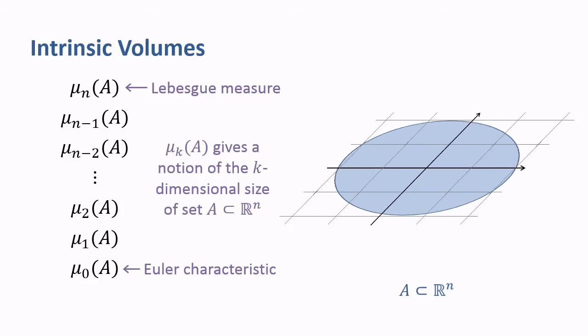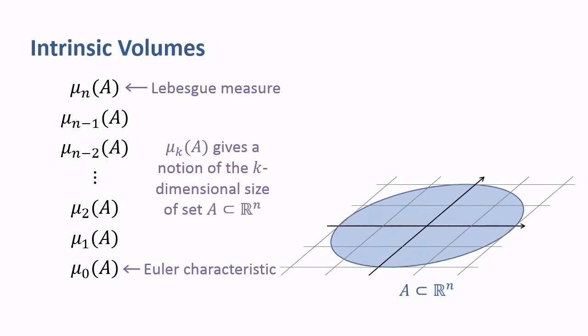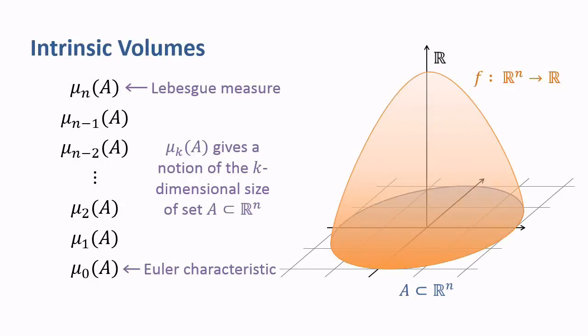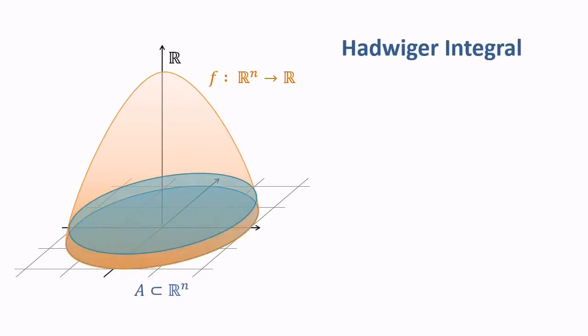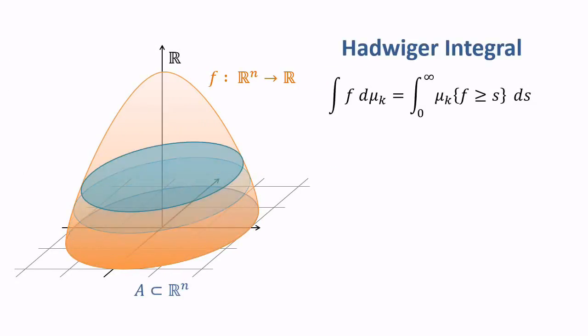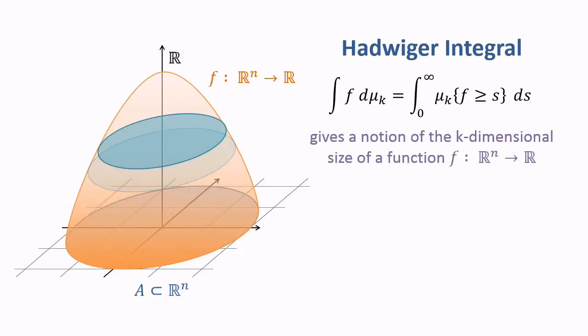In my thesis, I move from sets to functions. Integrals with respect to the intrinsic volumes, called Hadwiger integrals, give various notions of size for functions. I proved a Hadwiger theorem for functions which, informally, says that any notion of size for functions with certain properties is a linear combination of Hadwiger integrals.